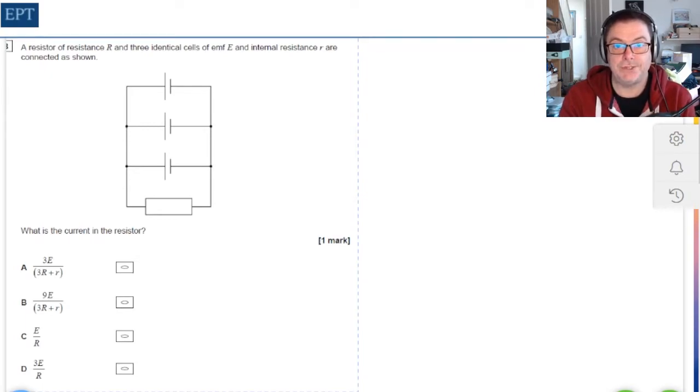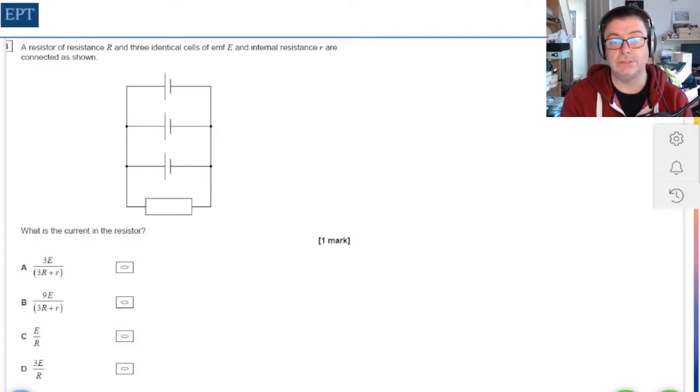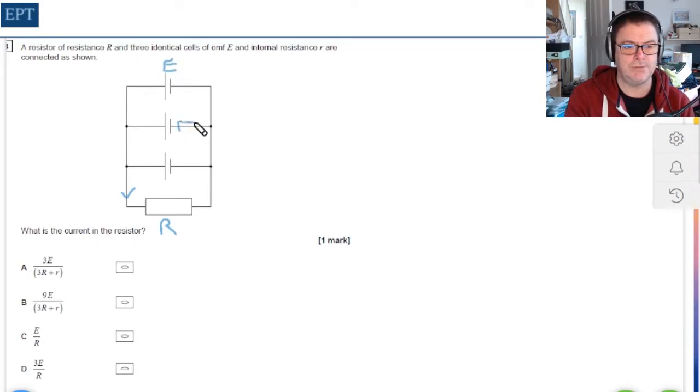Hello fellow physicists, once again it's Edward from Enfield Physics Tutor, solving all your multiple choice question needs. In this question, we have a simple little circuit with three cells connected in parallel, and we're asked to find the current through R. Each of these cells has an EMF of E, and surprisingly the example hasn't marked in the internal resistor, so let's just do one just so we know where it is.